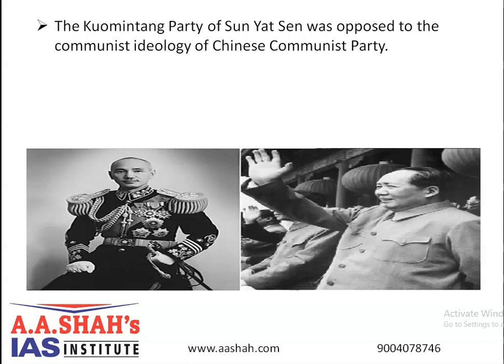Even though KMT's aim was establishing democracy in China, they were not aligned with communism. This is also where Soviet Russia began supporting the KMT — because there was a lot of tension between the United States and Russia at the time, and they wanted countries under their camp for greater influence. Soviet Russia supported the KMT with cash, military training, and arms, hoping for a friendly and united China in the future. Meanwhile the Chinese Communist Party was formed by leftist individuals in 1921.